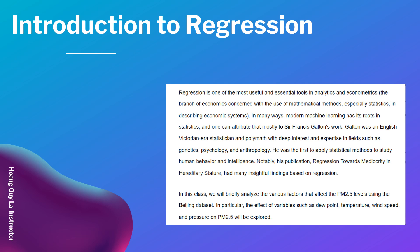In many ways, modern machine learning has its roots in statistics, and one can attribute that mostly to Sir Francis Galton's work. Galton was an English Victorian-era statistician and polymath with deep interest in fields such as genetics, psychology, and anthropology. He was the first to apply statistical methods to study human behavior and intelligence.